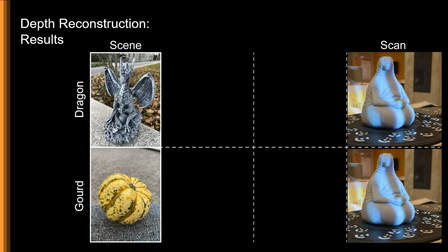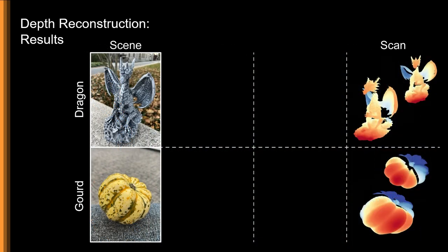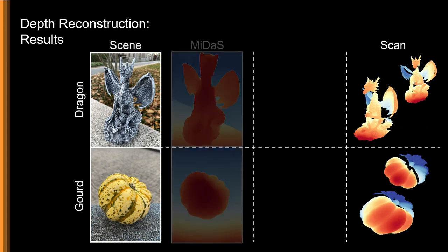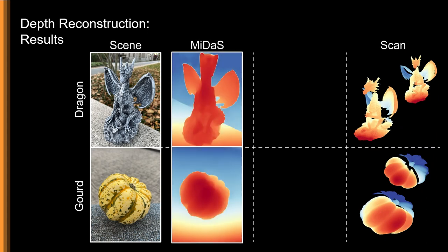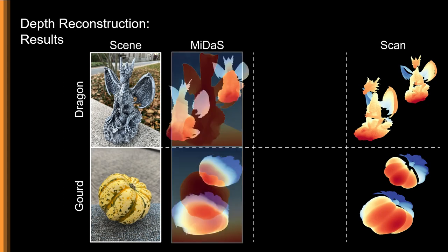Compared to ground-truth high-resolution structured light scans, we can see how a learned single image method produces reasonable-looking depth maps without any parallax cues. But upon closer inspection,